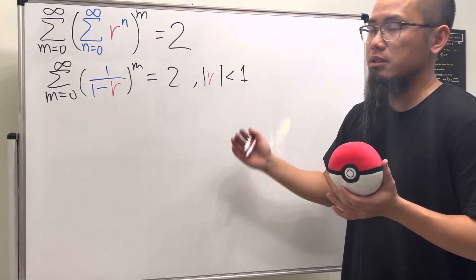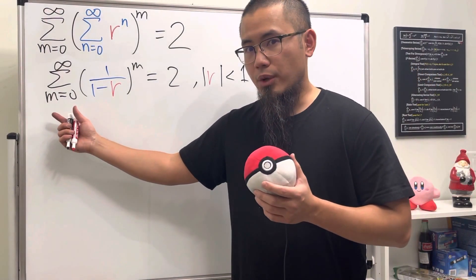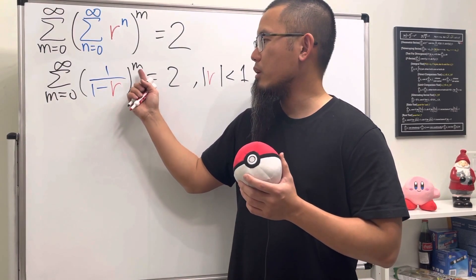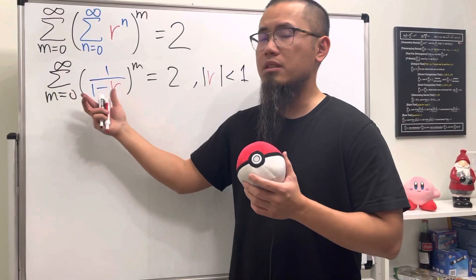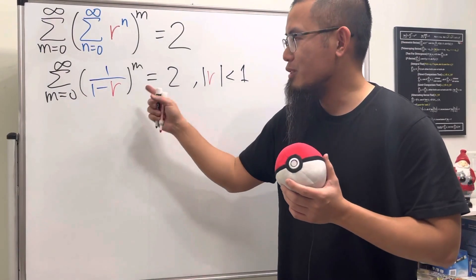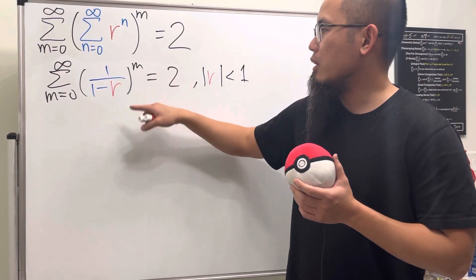Right here you see that we have this, which is a number raised to the m's power, and we go from zero to infinity. This is still a geometric series. So assuming that this right here also converges, it will converge to, put a zero in here for the first term, we will just get one.